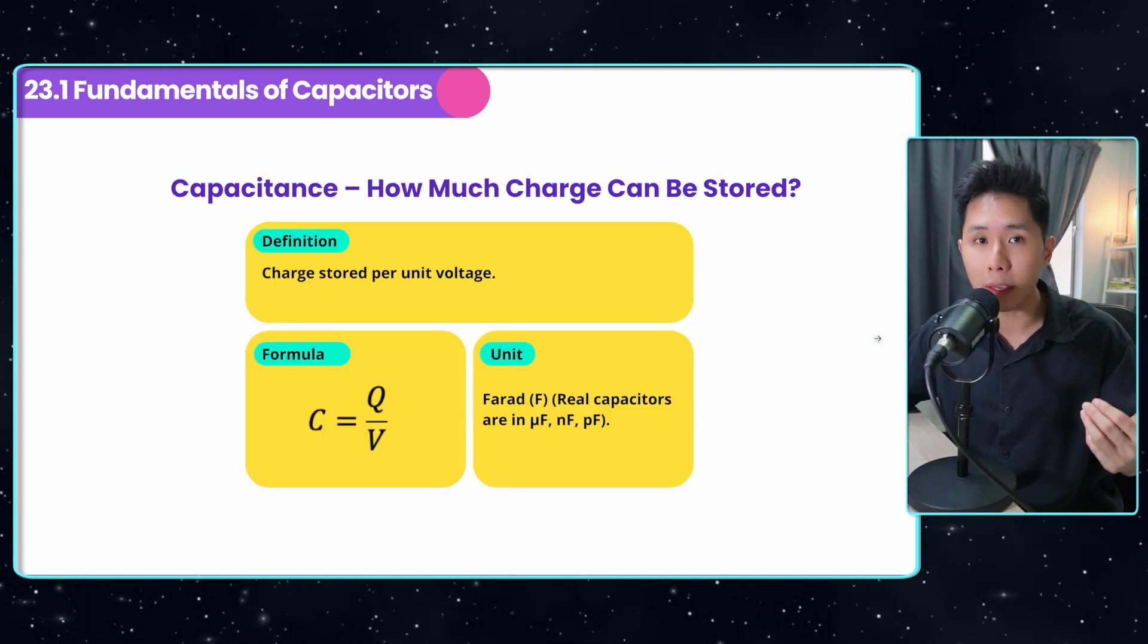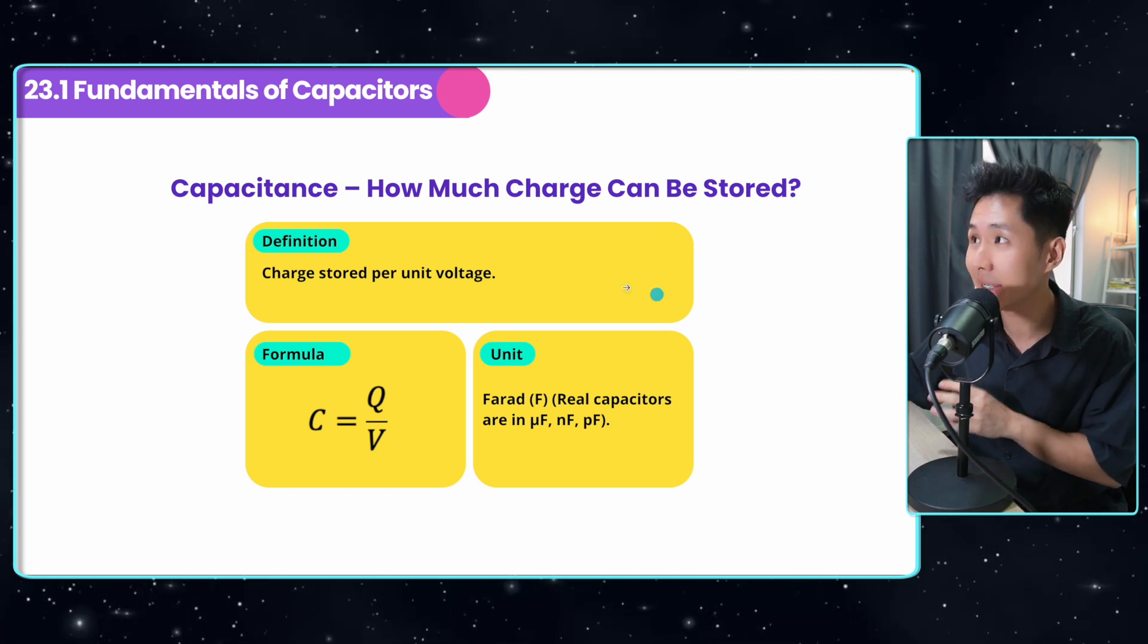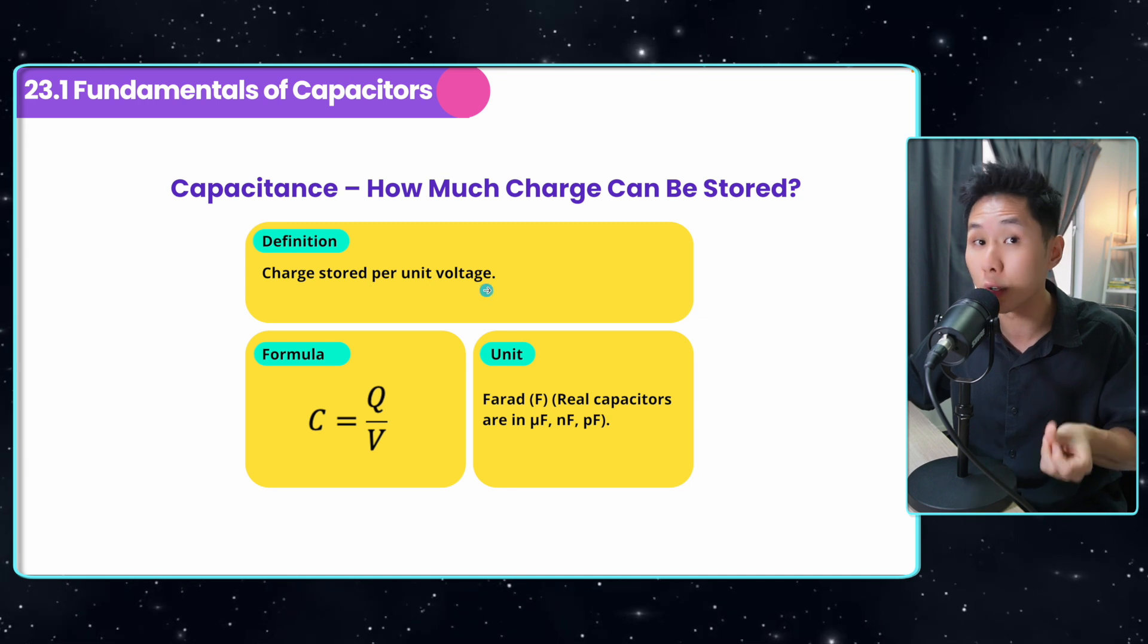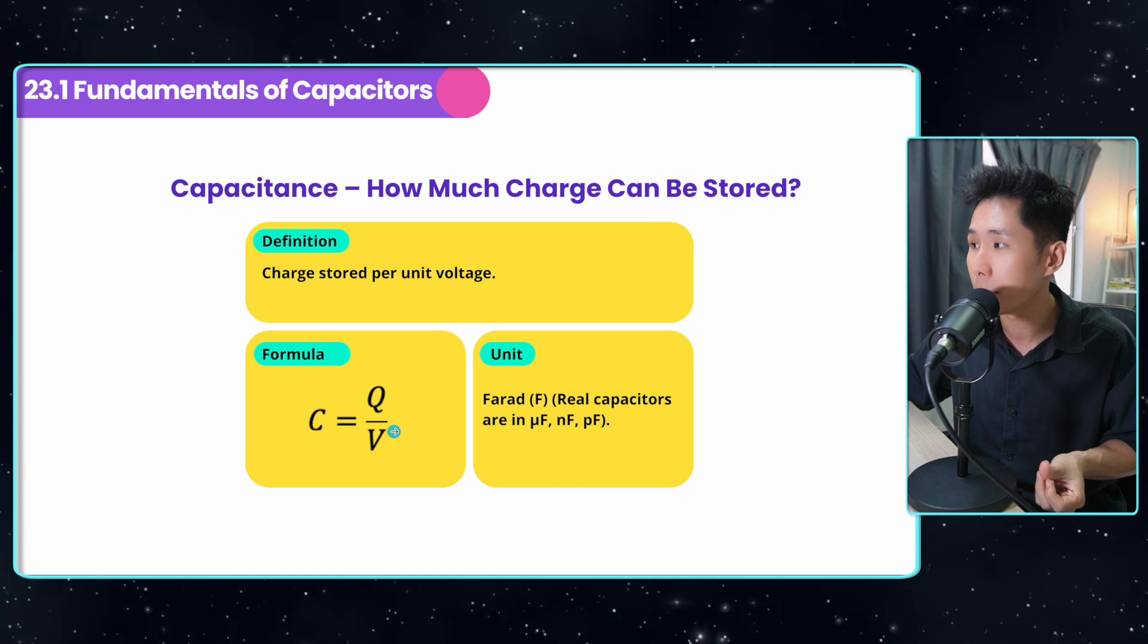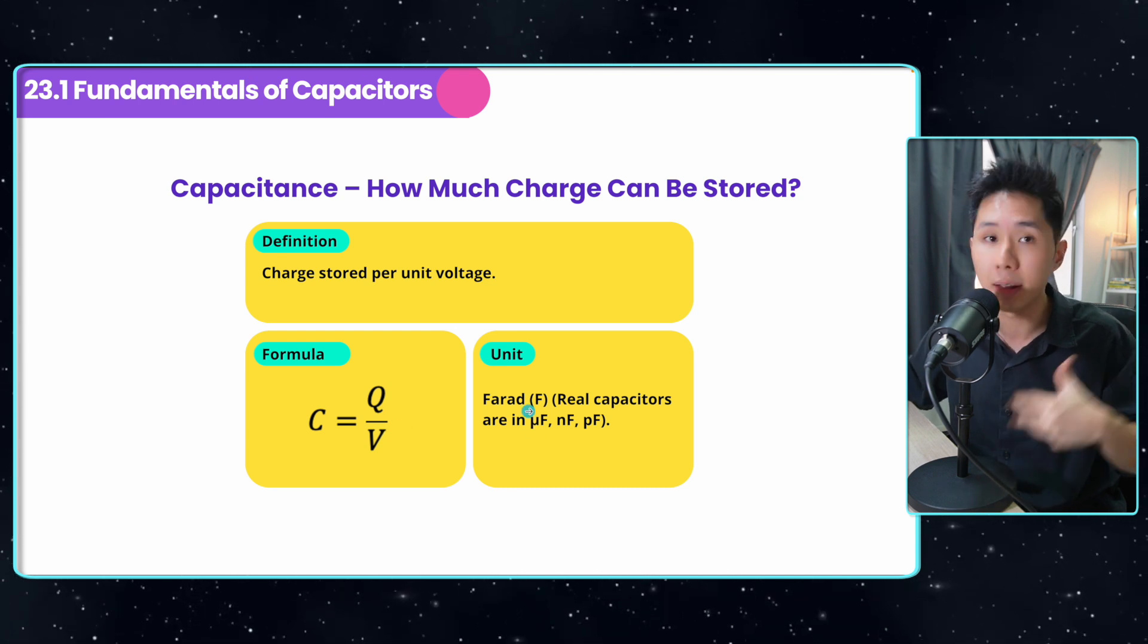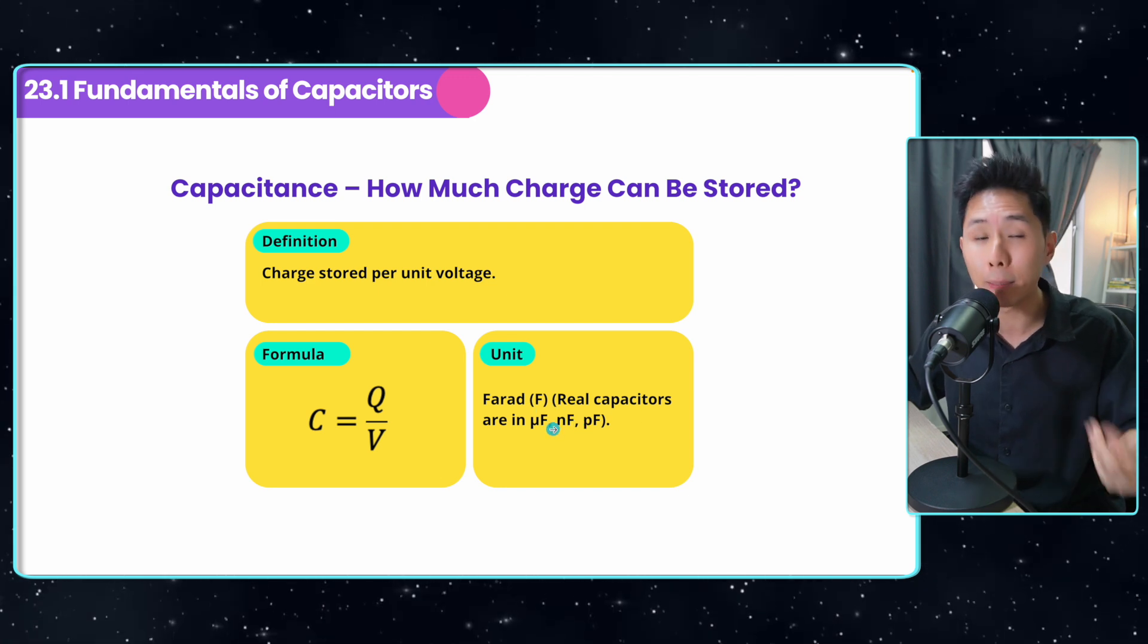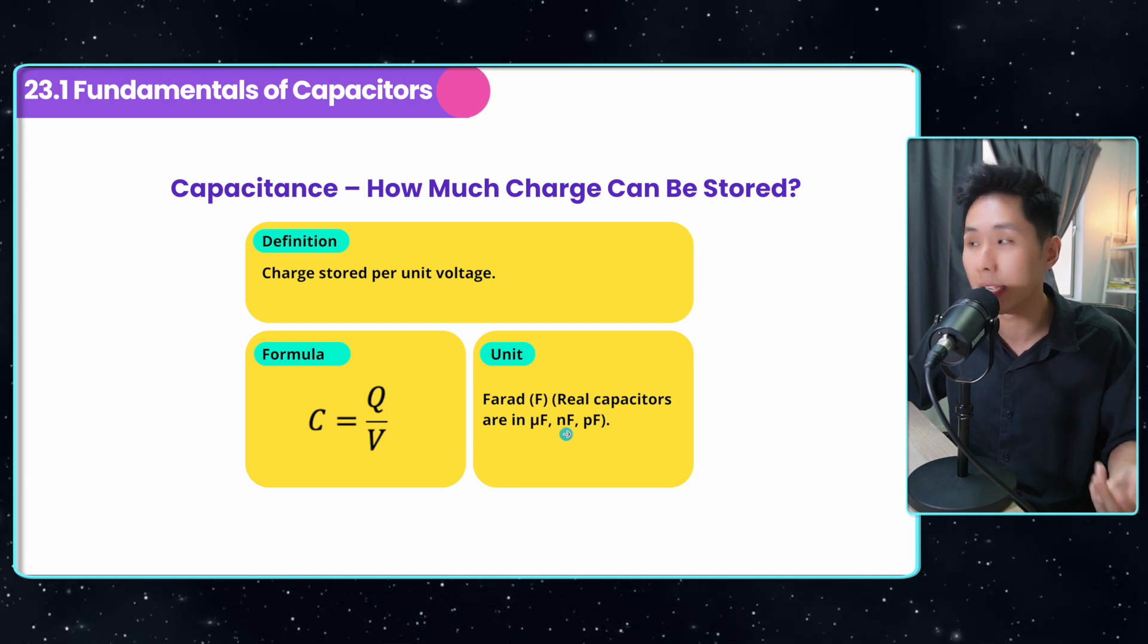Well, the next topic we're going to explore is how much charge can a capacitor store? And that's the concept of capacitance. It is the charge stored per unit voltage, the amount of charge stored in one unit of voltage, and the unit of it is in farad. But real life capacitors usually have way less farad, we typically use prefixes like microfarad, nanofarad, etc.